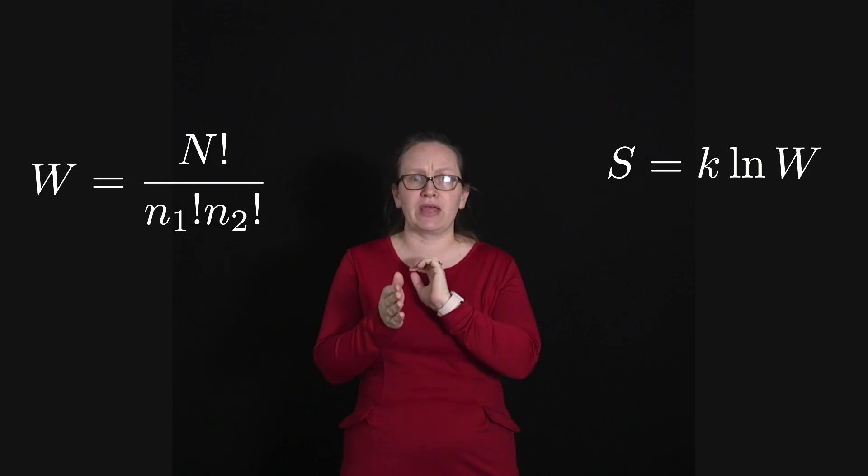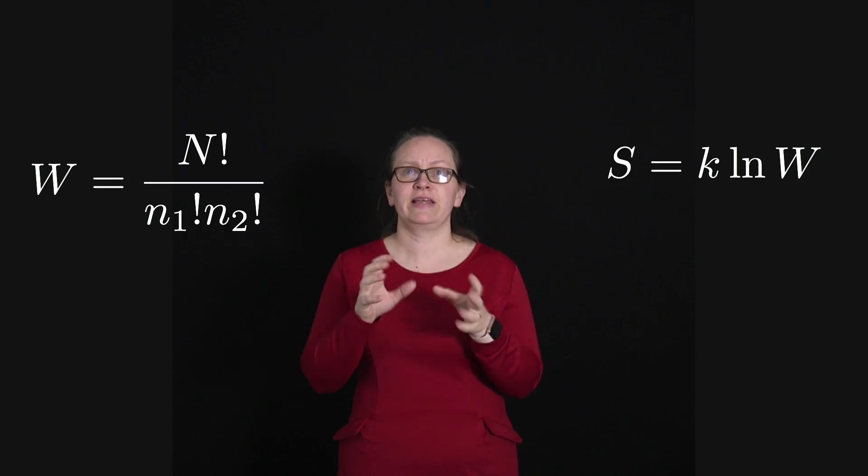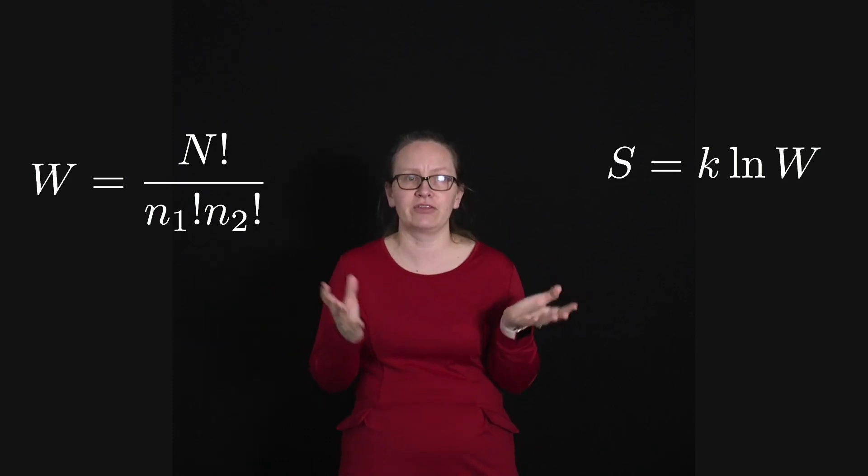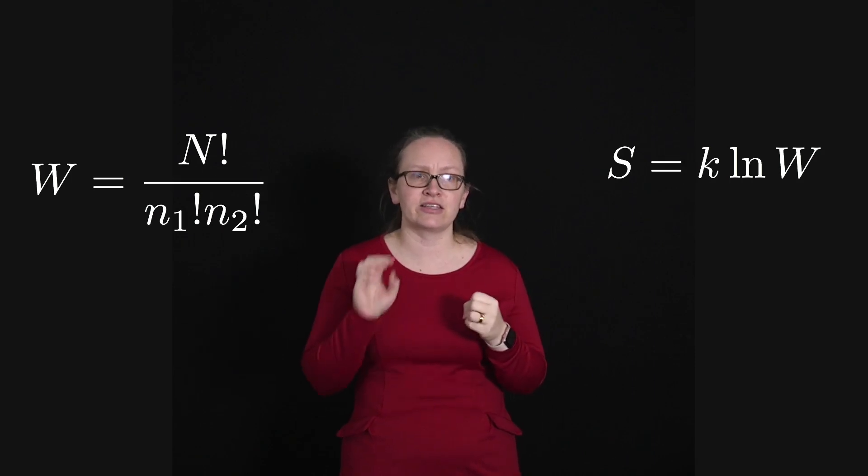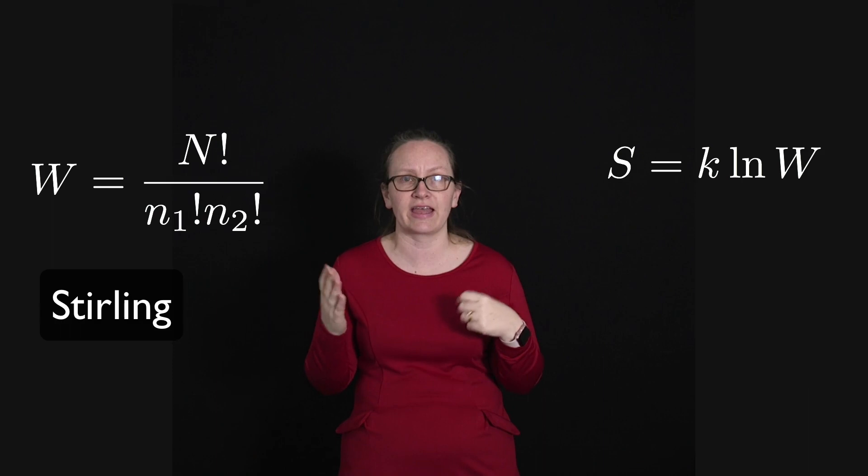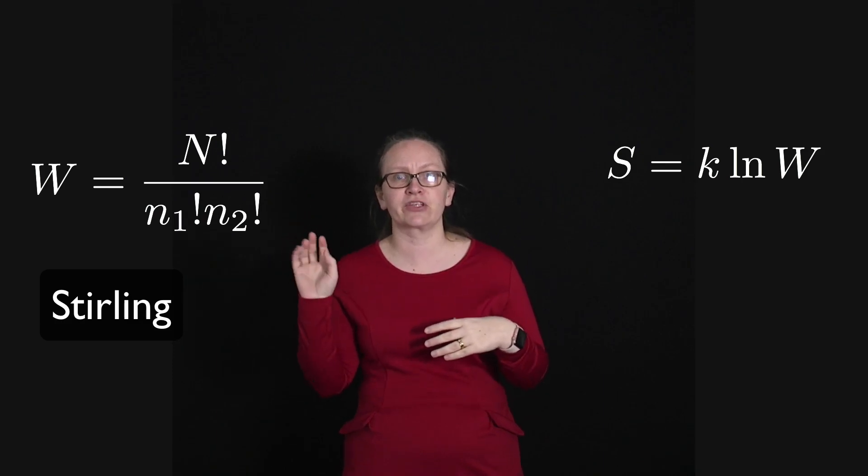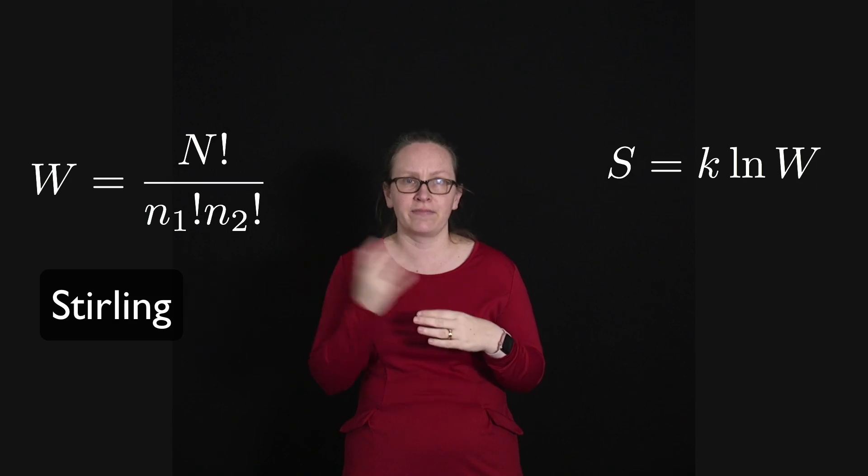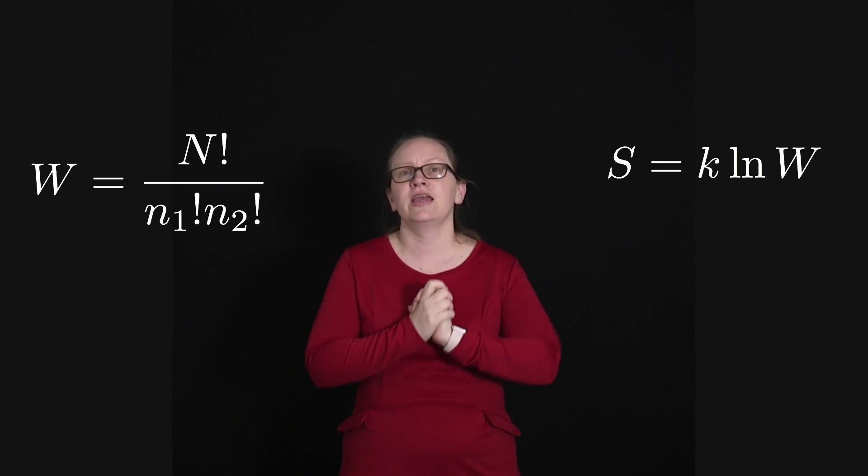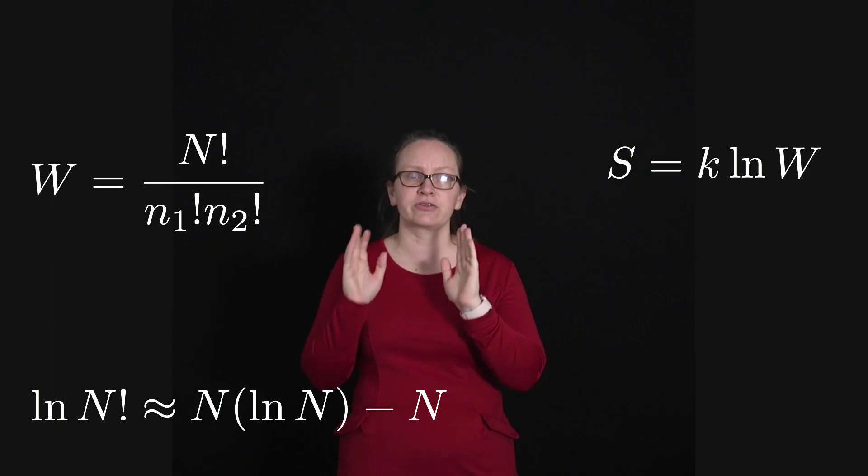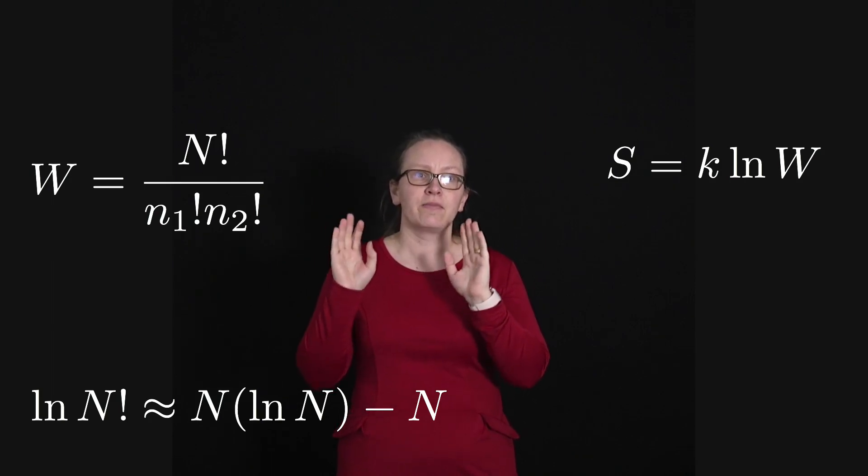Now one thing you should be aware of is because factorials can get really big really quickly, sometimes your calculator can't cope with it and will have an overflow. In that case it's useful to make use of an equation that Stirling came up with. If you've heard of Stirling engines before, it's not the same Stirling. This is a different Stirling, a mathematician. He showed that log of N factorial is equal to N log N minus N.